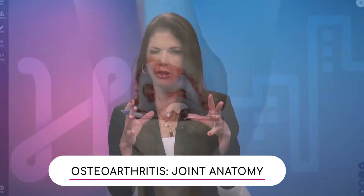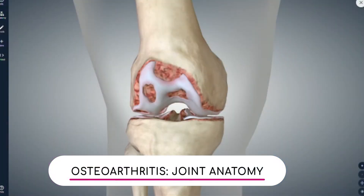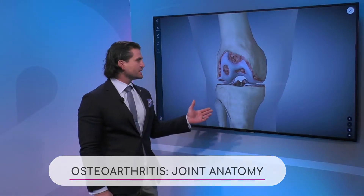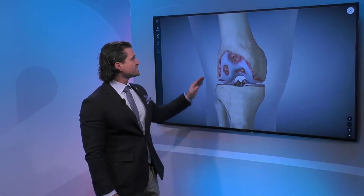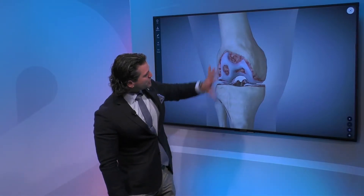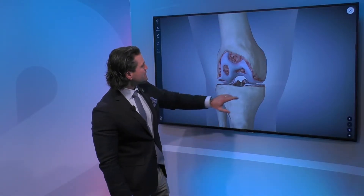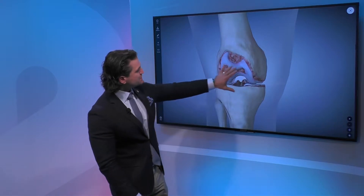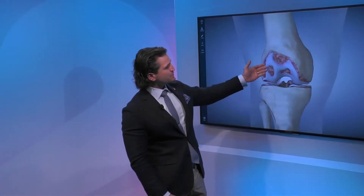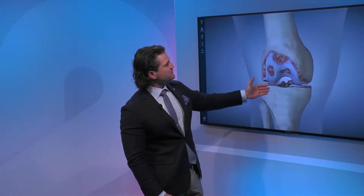We have what I believe is osteoarthritis and the doctor can explain what we're seeing here. This is a nice 3D rendering of osteoarthritis. Basically what we see here is a knee — femur, tibia, and this is the knee joint. The joint is the articulation between the two.